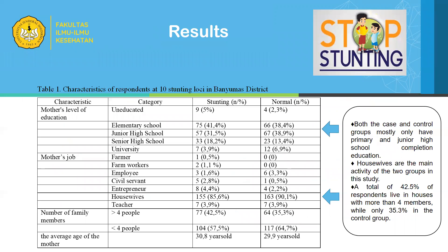From the characteristics of the respondents, both the case and control groups mostly completed only primary and junior high school education. Housewife is the main activity of both groups in the study. A total of 42.5% of respondents in the case group live in a house with more than four family members, while only 35.3% in the control group.